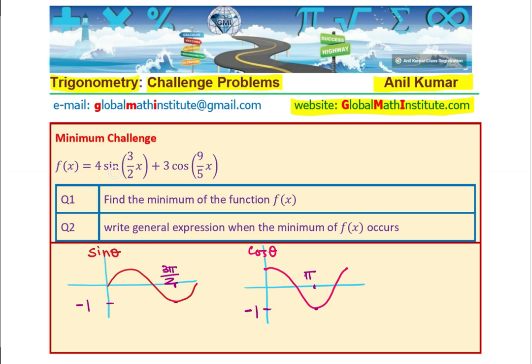For any angle theta, right? So, in this expression, the minimum can be for 4 sine 3x by 2, just 4 times minus 1. And similarly, for this expression, the minimum can be 3 times minus 1. So, minimum possible value will be 4 times minus 1 plus 3 times minus 1, which gives us minus 4 minus 3, which is minus 7.